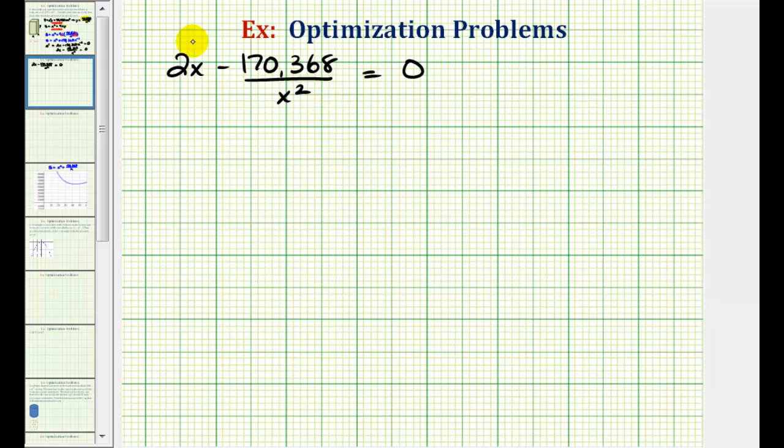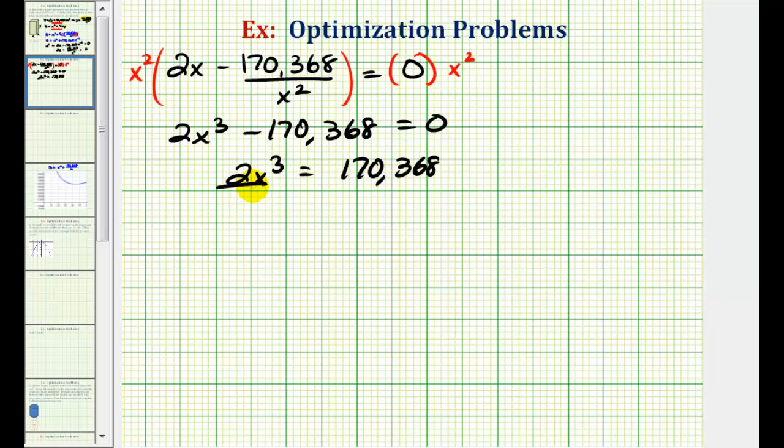Let's go ahead and clear the fraction by multiplying both sides of the equation by x squared. So we'd have two x to the third. Notice here the x squared would simplify out. So we have minus 170,368 equals zero. Let's go ahead and isolate x cubed, so we'll add this constant to both sides.